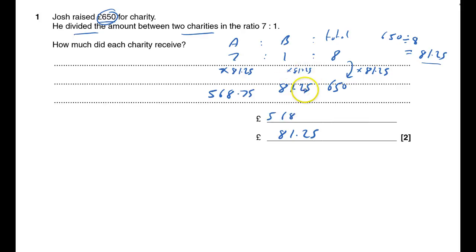And if I write down here, I've got a calculator. I can always add them up just to check that I do get £650. And if I do, then I've got my two marks for the first question. That's one done.